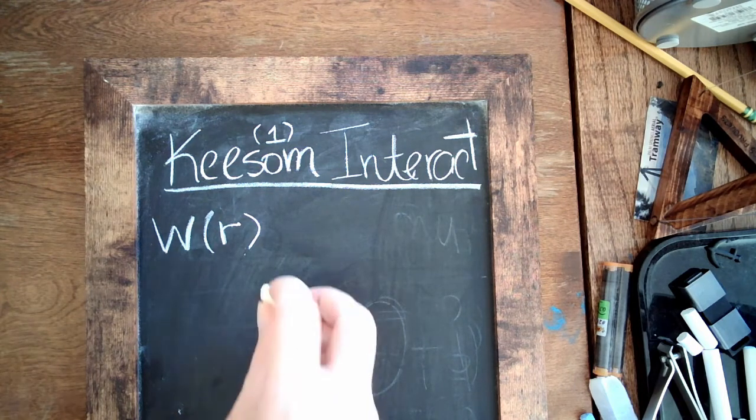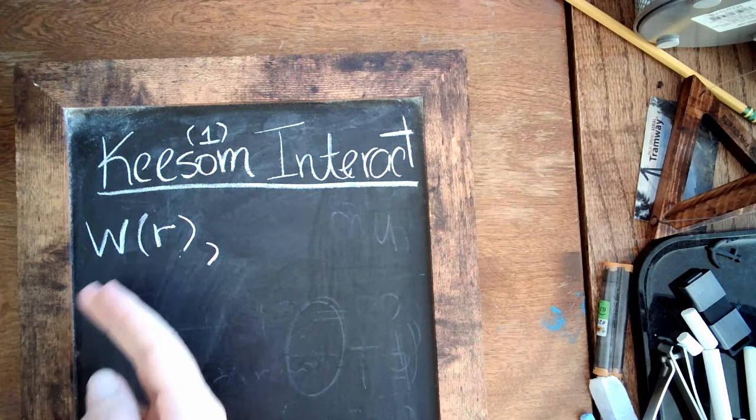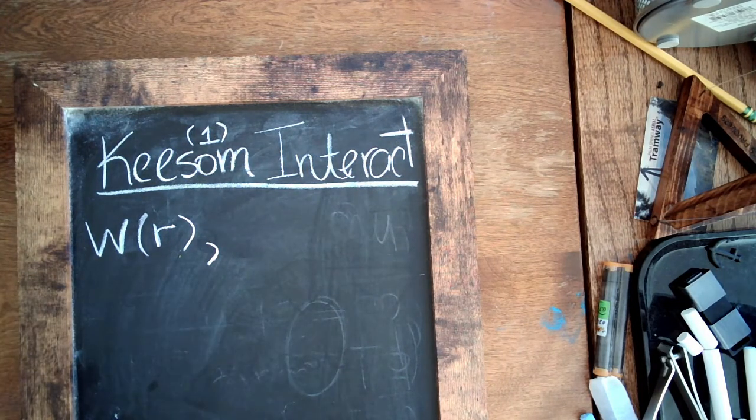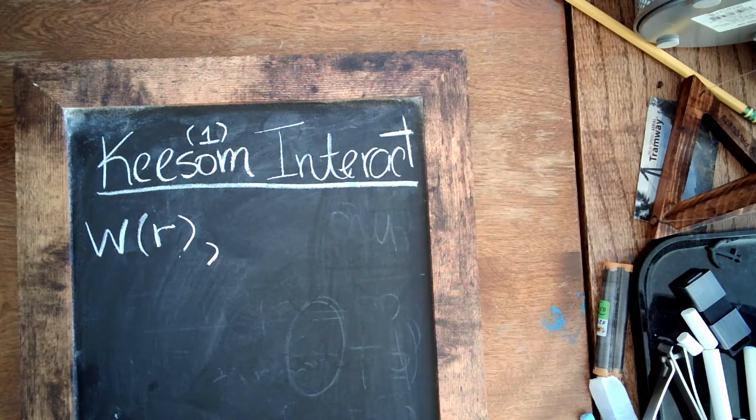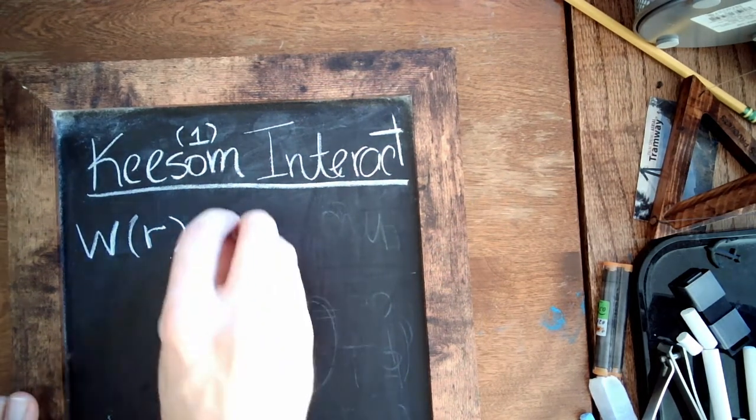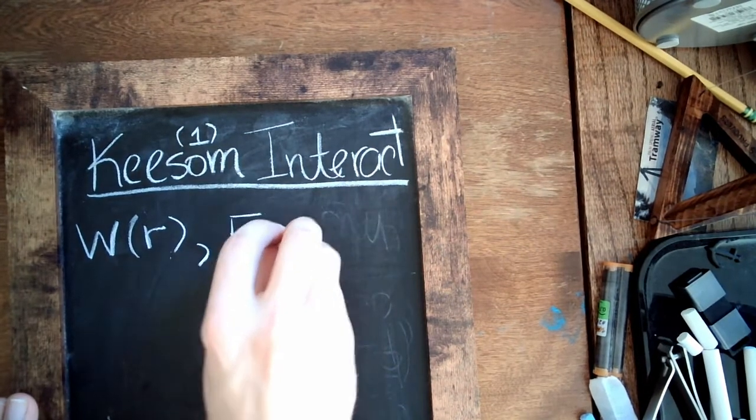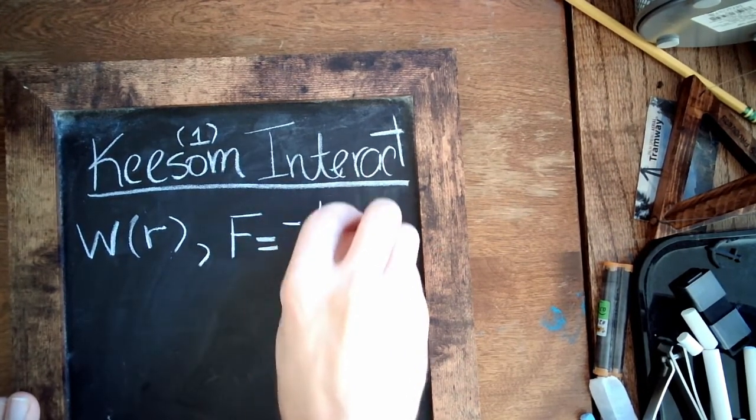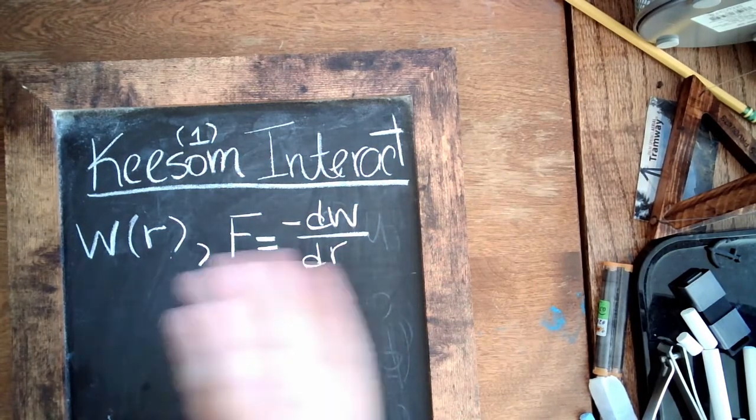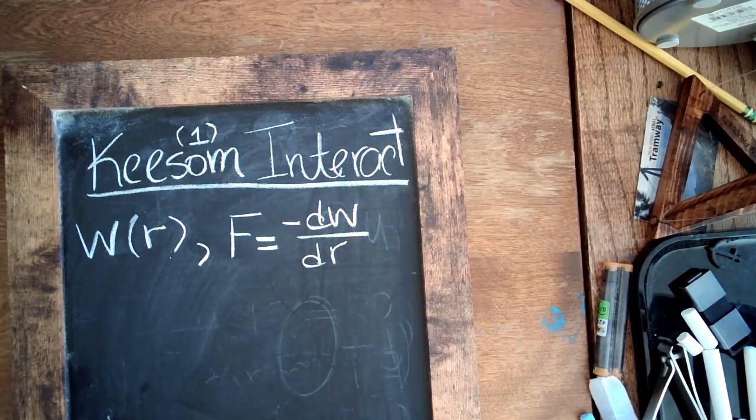And similarly, you can imagine this W is like the work it would do to pull apart this configuration and attraction between two atoms or molecules. And we can also write down that the force between the molecules would be the negative derivative with respect to distance, where r is of course this radius distance between the two objects.